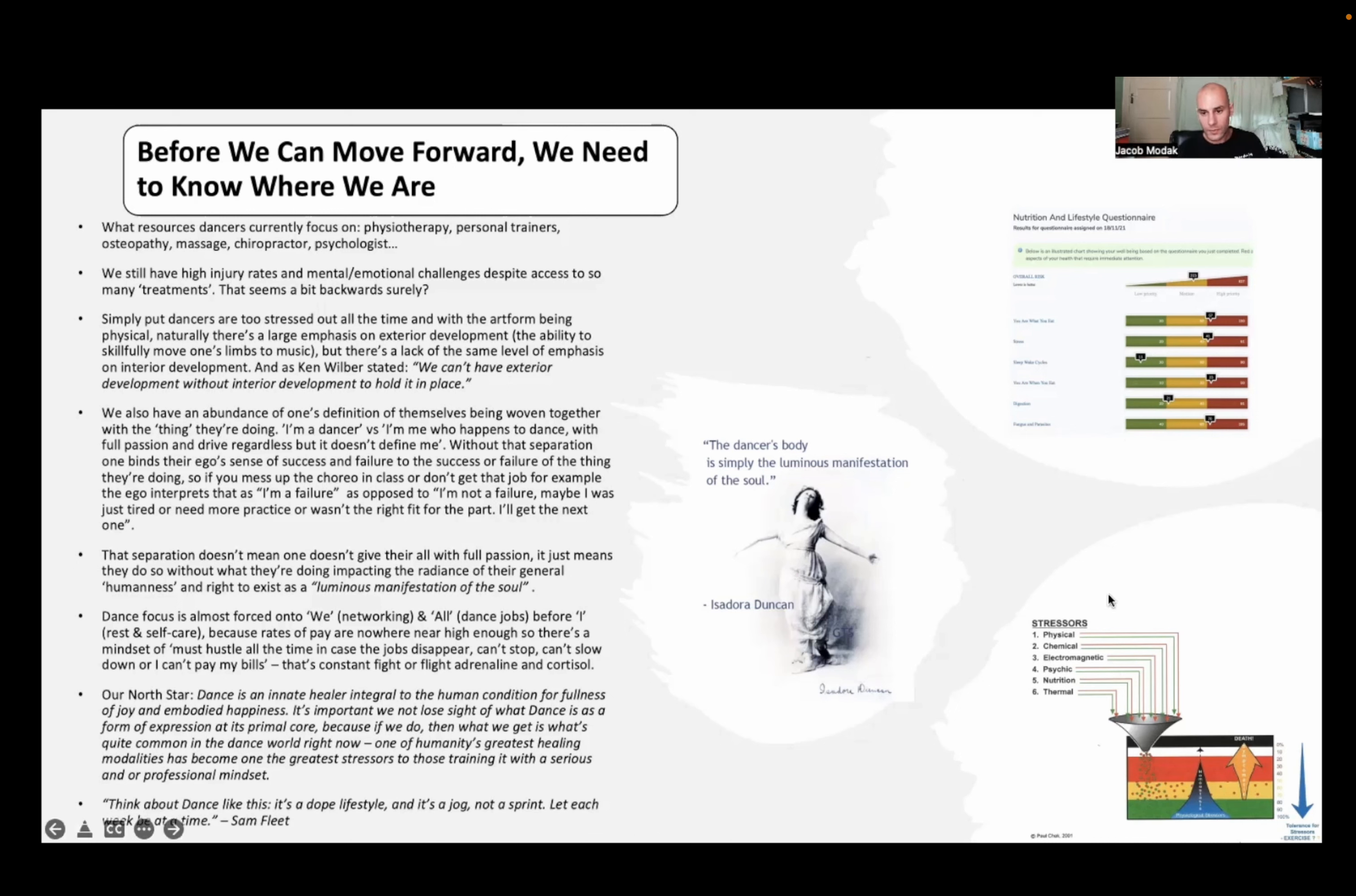We've got this graphic down here, all stress summates in the body, it all comes together. So the body only knows whether it's overly stressed or stress levels are under what its capacity is, meaning one doesn't feel stressed. We have physical, chemical, electromagnetic, psychic, nutritional, and thermal.